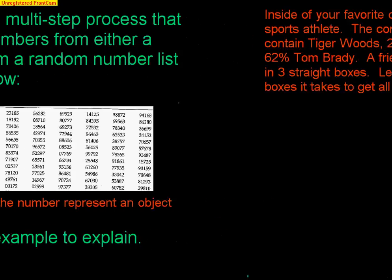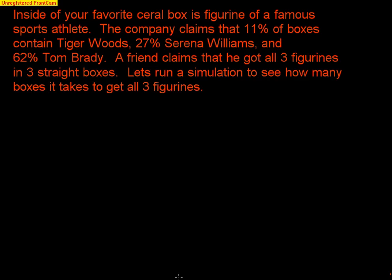Here's an example to see how we use numbers to represent random outcomes. Inside a cereal box is a figurine of a famous sports athlete. The company claims 11% of boxes contain Tiger Woods, 27% contain Serena Williams, and 62% contain Tom Brady. A friend claims he got all three figurines in three straight boxes. Let's run a simulation to see how many boxes it typically takes to get all three figurines.